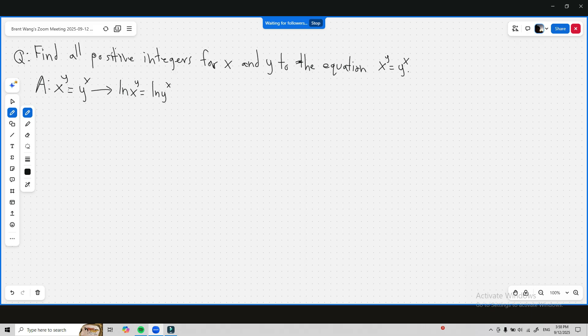Now what we do afterwards we have y ln x is equal to x ln y, and we can divide both sides by xy since x and y clearly can't be zero.